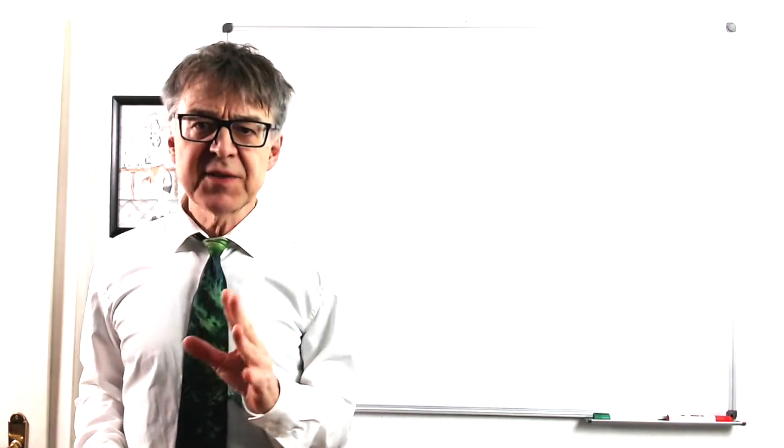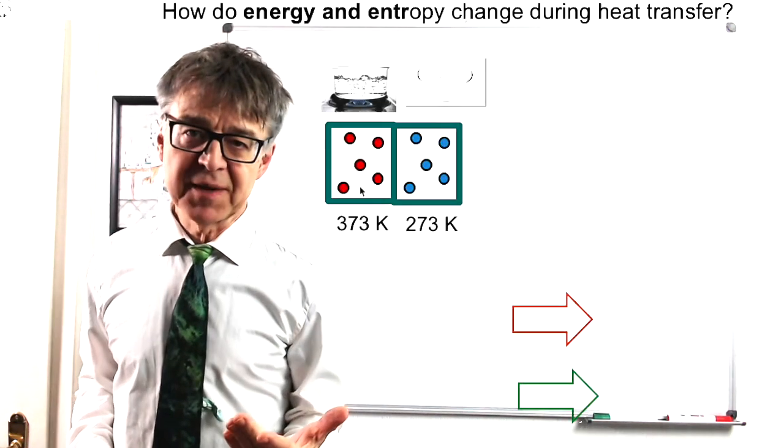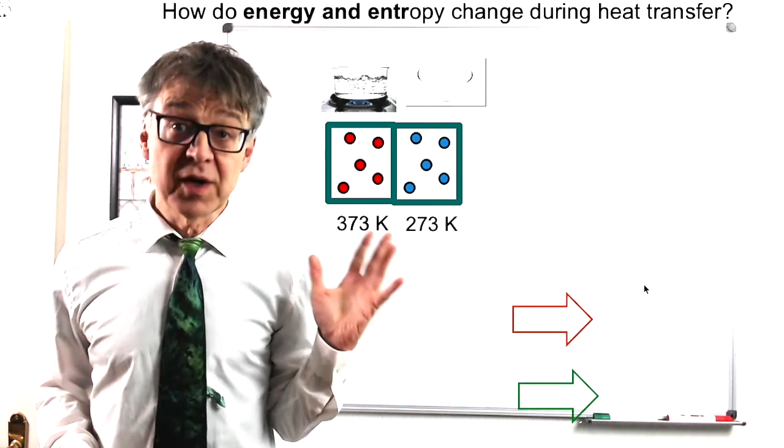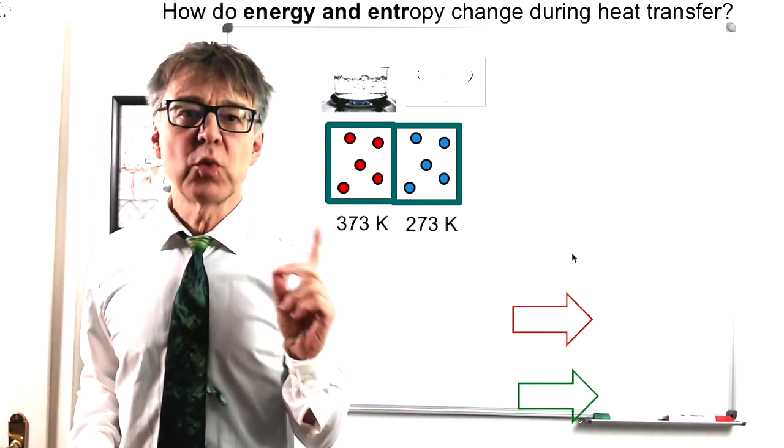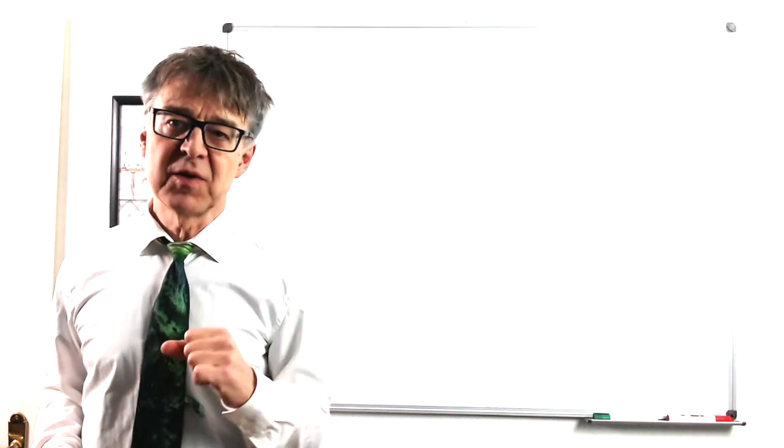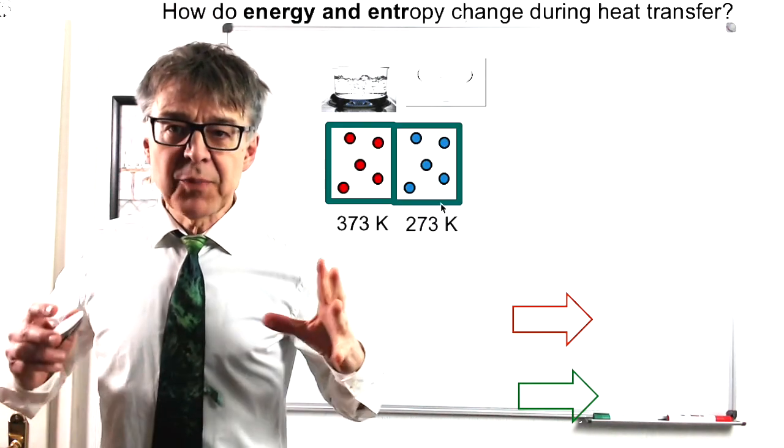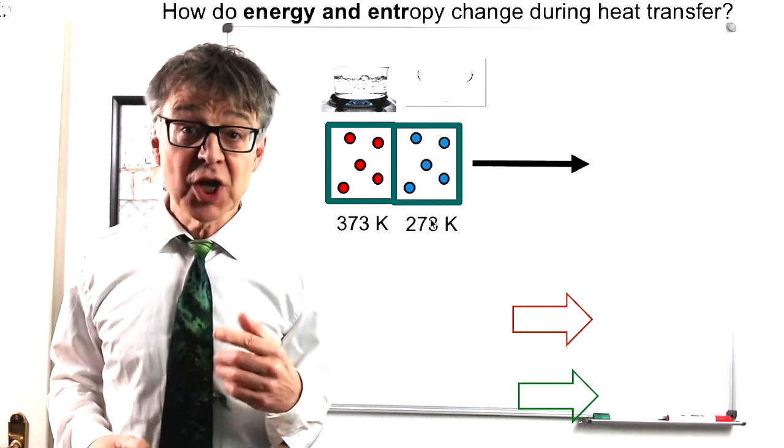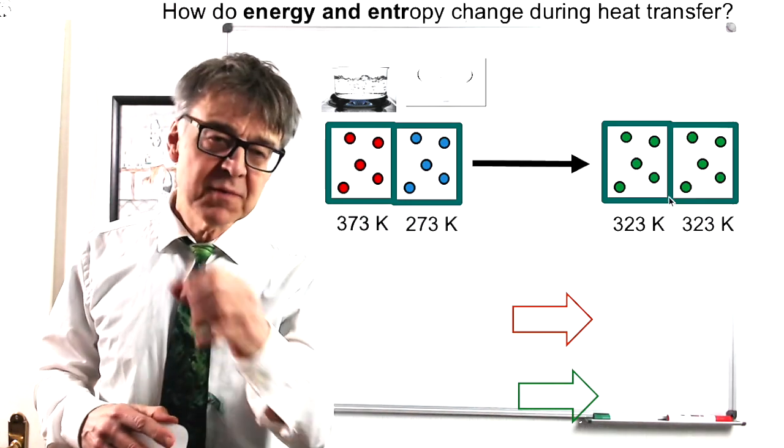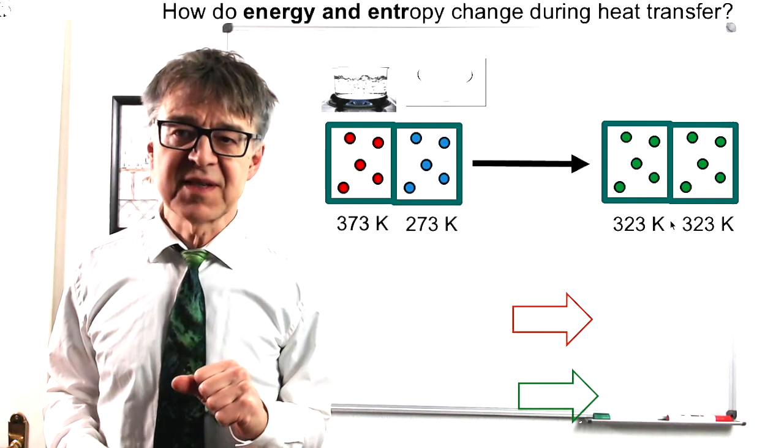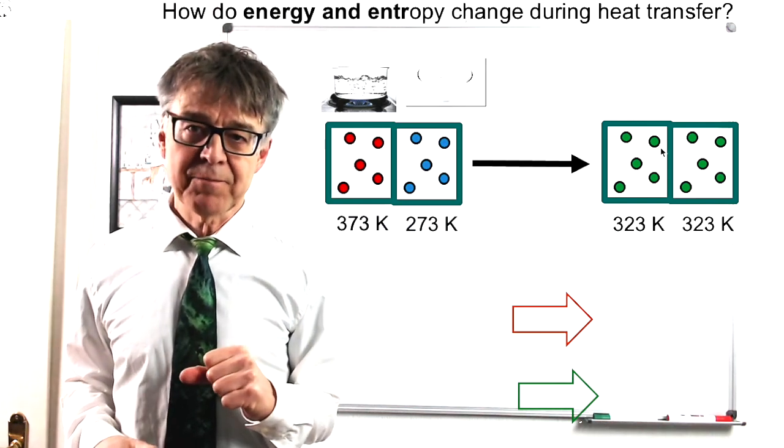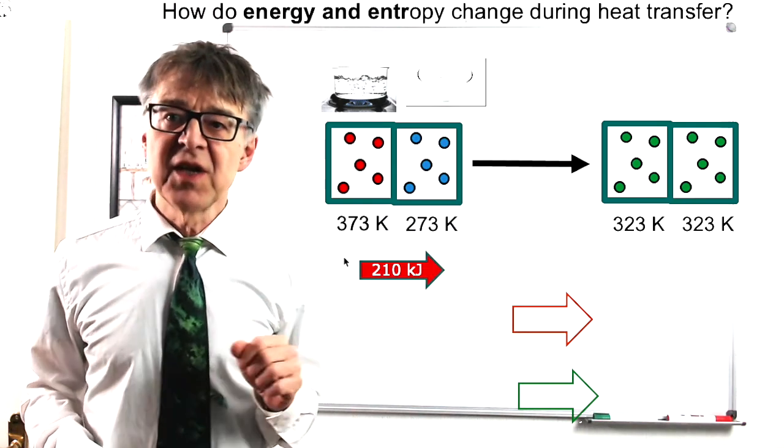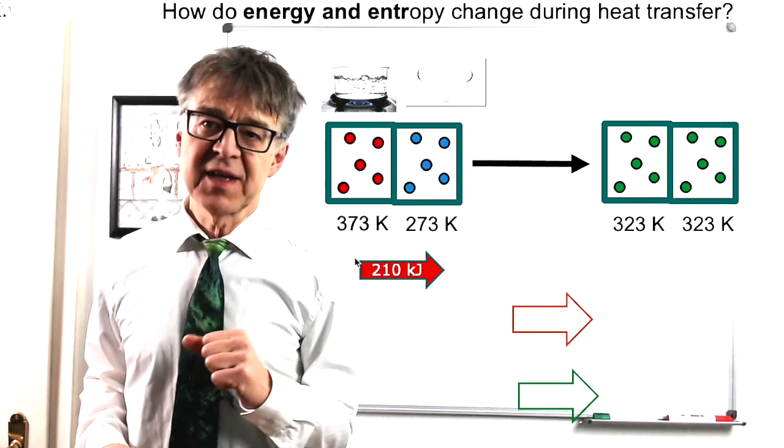Let's discuss a heat transfer experiment thermodynamically. Consider two subsystems. One liter of water at 100 degrees Celsius and one liter of water at 0 degrees Celsius. After bringing these systems in thermal contact, eventually thermal equilibrium will be reached with a uniform temperature of 50 degrees Celsius in both of the systems. Using the heat capacity of water, we may easily calculate the transferred heat to be 210 kilojoules.